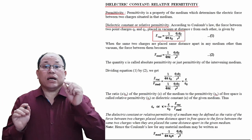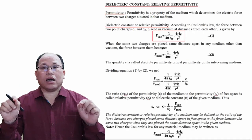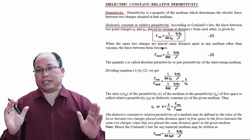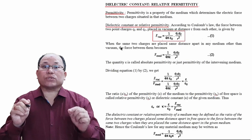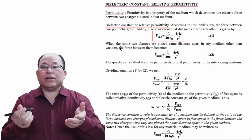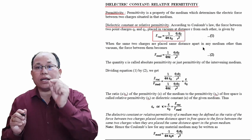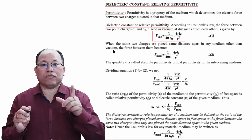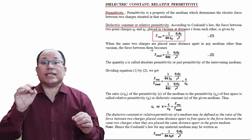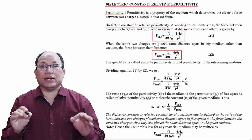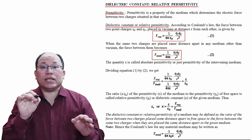Now let us consider two cases. First, two charges q1 and q2 are kept at a certain distance in vacuum — that is, in free space. In the next step, we keep the same two charges at the same distance apart in any medium other than vacuum. The force between them then becomes: F_medium = (1 / 4πε) × (q1·q2 / r²). This is equation 2.